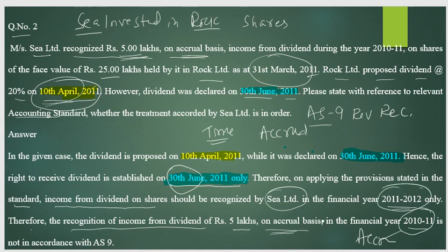So recognition of income from dividend on accrual basis falls in financial year 2011-12. In 2010-11 it was not received — show it as outstanding. In 2011-12 it was received — show it as received. That is the answer for question two.